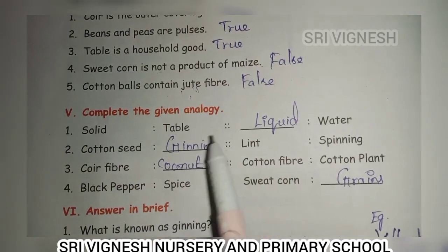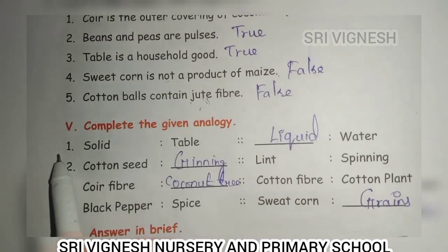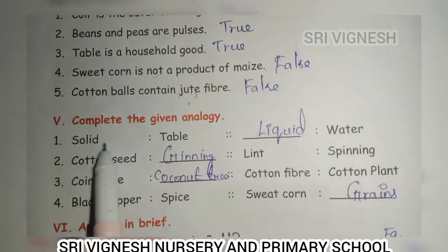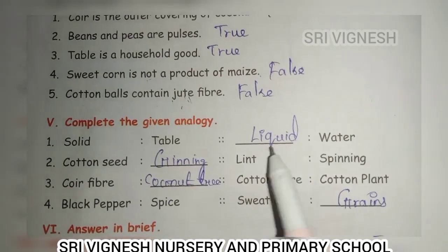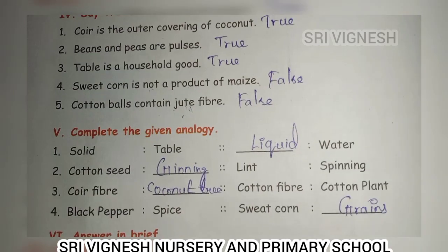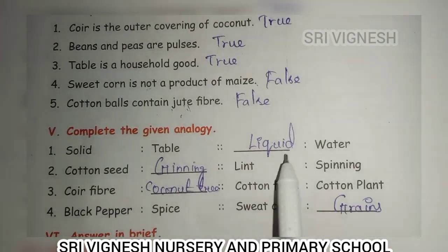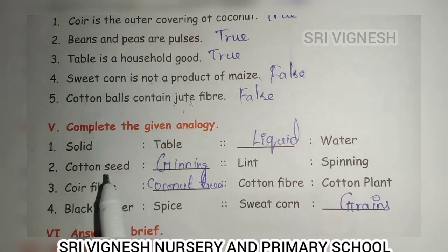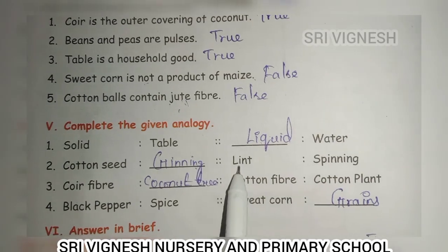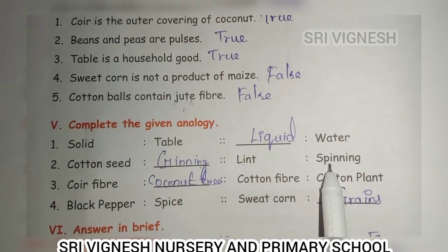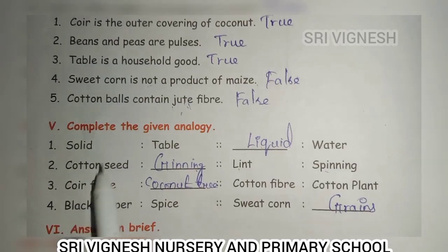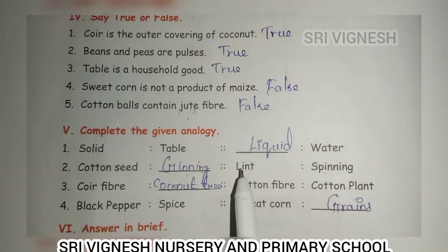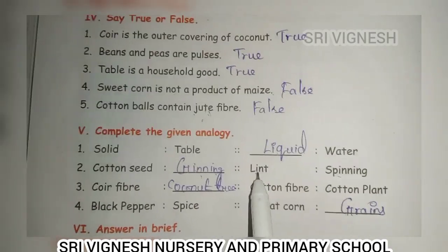Next, complete the given analogy. First one — solid: table. That is a solid. So solid is to table as liquid is to water. Cotton seed — first one is the ginning process. Lint.